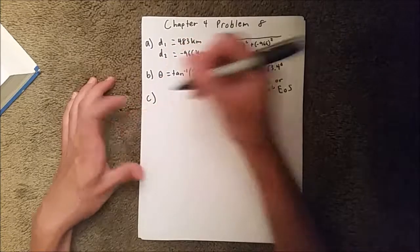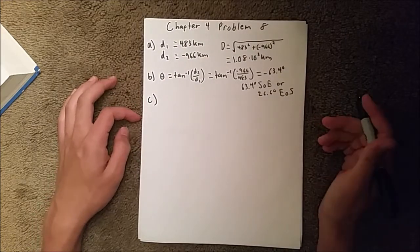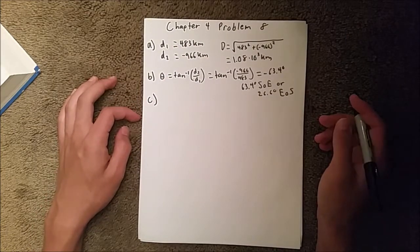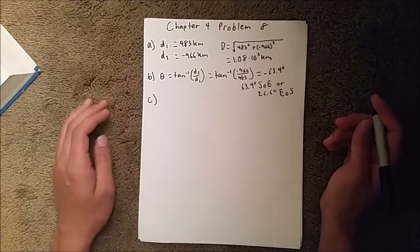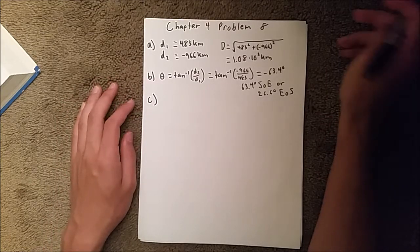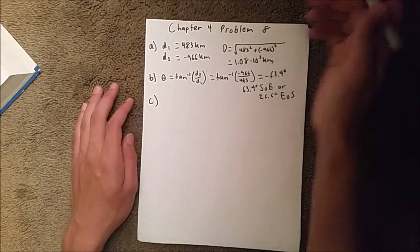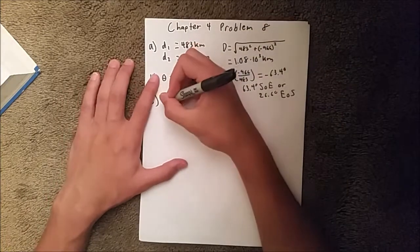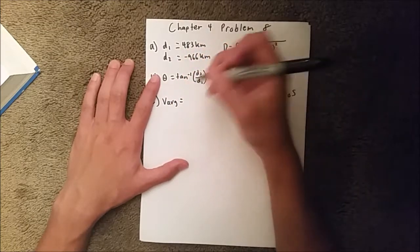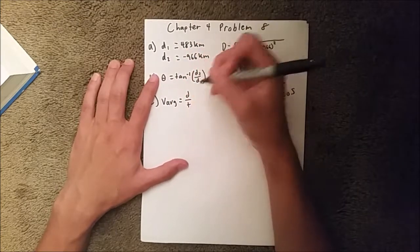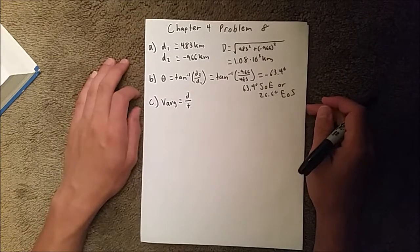Now, for part C. In part C, we are asked to find the magnitude of the average velocity of everything. So, we know that average velocity, we just know that velocity equals distance over time. So, we need to find the average velocity of each piece.